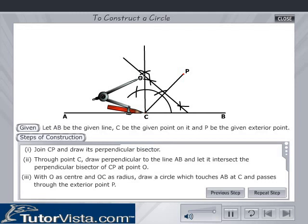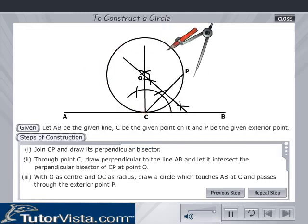With O as center and OC as radius, draw a circle which touches AB at C and passes through the exterior point P.